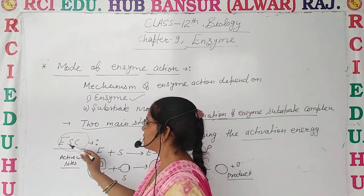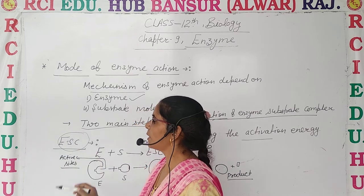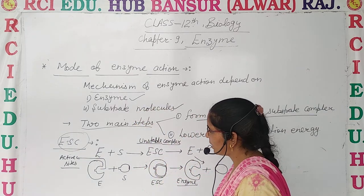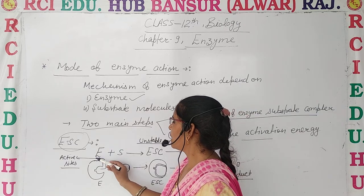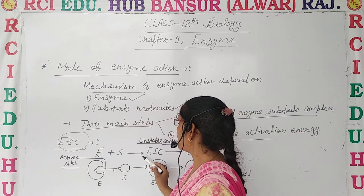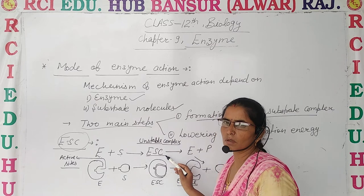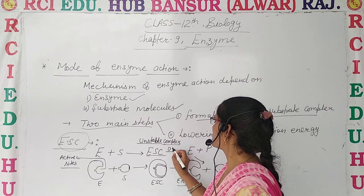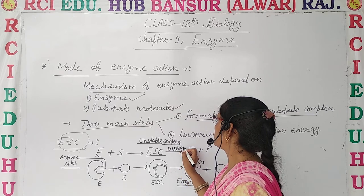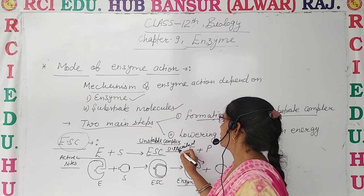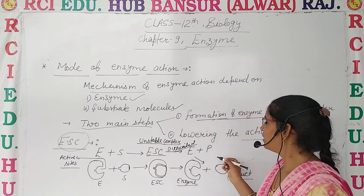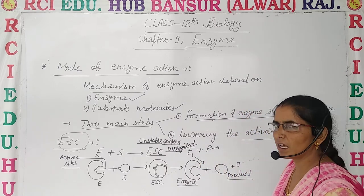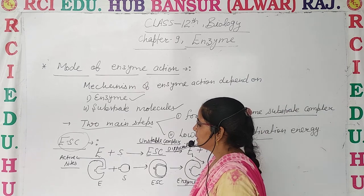The enzyme gets combined with the substrate molecule to form an enzyme-substrate complex. It is shown here — enzyme combines with the substrate to form the ES complex, which is unstable. Later on, its bonding dissociates and it releases the product, and the enzyme again becomes free to bind with another substrate.